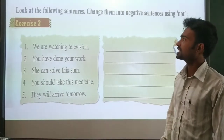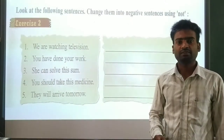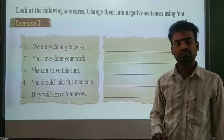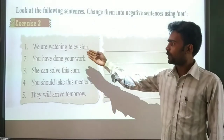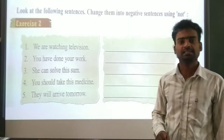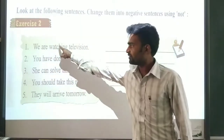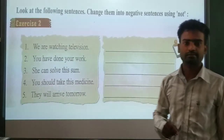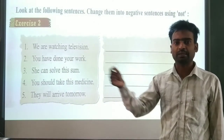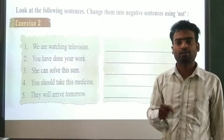Look at the following sentences. Change them into negative sentences using 'not'. In the previous exercise we were using 'no' and 'not', but here we will use only 'not' to make the positive sentence into a negative one. 'We are watching' - 'watching' is the main word. Before the main word, we have to use 'not'. This is a grammar rule. We have to use 'not' before the action word - the main word.